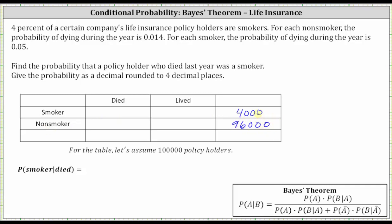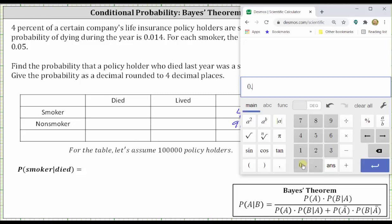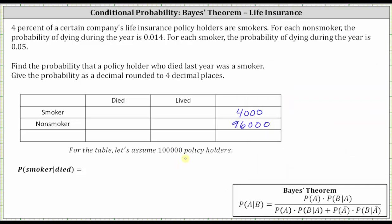Now we will record how many we expect to live or die during the year. For each non-smoker, the probability of dying during the year is 0.014. To find the number we expect to die during the year, we multiply 0.014 by 96,000, which is 1,344. For the number we expect to live, we subtract 1,344 from 96,000, which gives us 94,656.